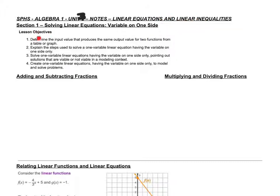The first section is we want to solve linear equations with a variable on one side. We want to determine the input value that produces the same output value, explain the steps used to solve an equation, actually solve those linear equations, and then create one-variable linear equations.